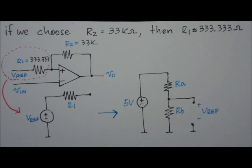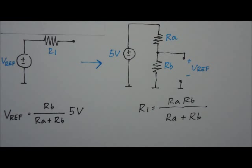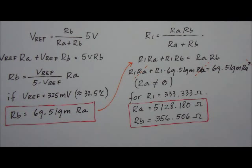Now, remember that we are going to use a couple of resistors to produce Vref. We need to find the values of Ra and Rb from R1 and Vref. Solving these two equations, we get the analytical values of Ra and Rb.